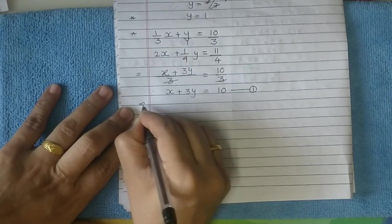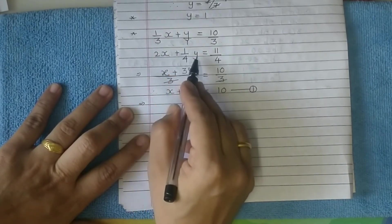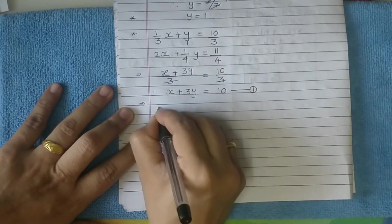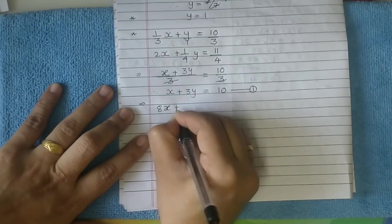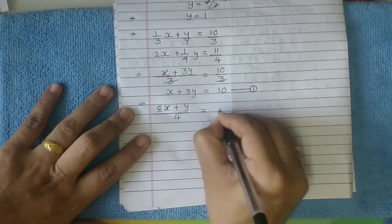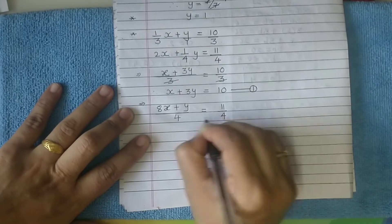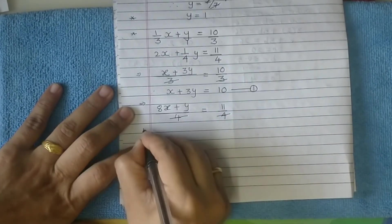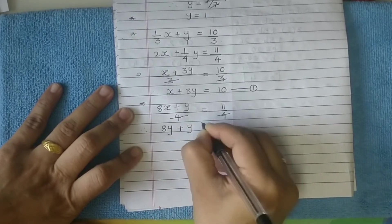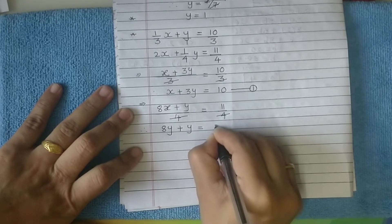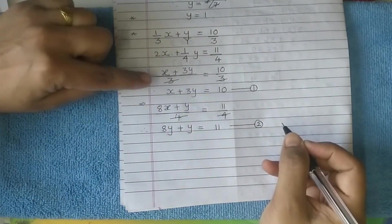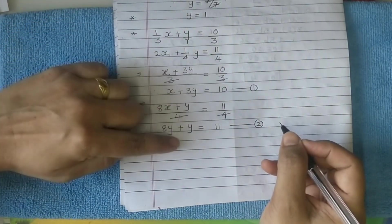Likewise, take the other equation: 2x plus 1 upon 4y equals 11 upon 4. LCM of 4 and 1 is 4. Here you get a simplified equation: 8x plus y equals 11. This is our equation number 2. Coefficient of x is 1 and 8, coefficient of y is 3 and 1.